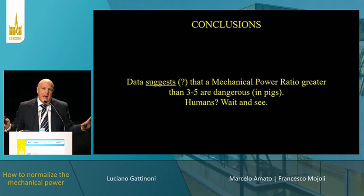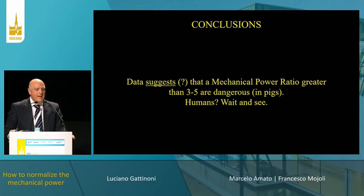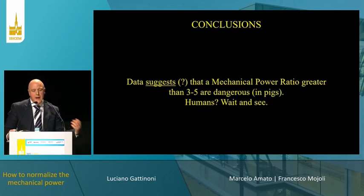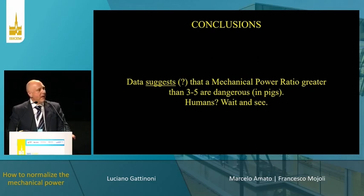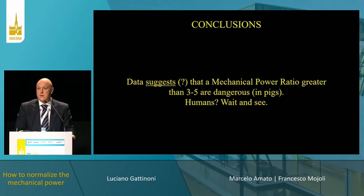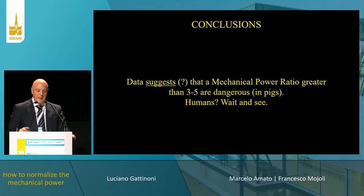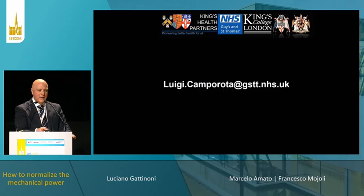To conclude with Professor Gattinoni's intended conclusion: when looking at a way to compare and normalise mechanical power, we could use the mechanical power ratio, analogously to the ventilatory ratio. Based on animal and human data, a threshold above 3 to 5 seems very dangerous and clearly leads to more injury in animals — though what the threshold is in humans remains unclear. We are now comparing large databases of critically ill patients with animal data to see whether we find a similar signal. Hopefully we'll have more results next year. Thank you for your attention.